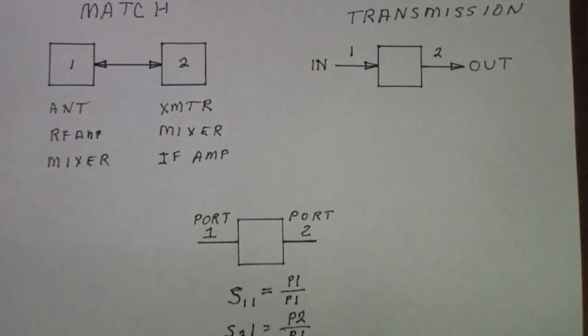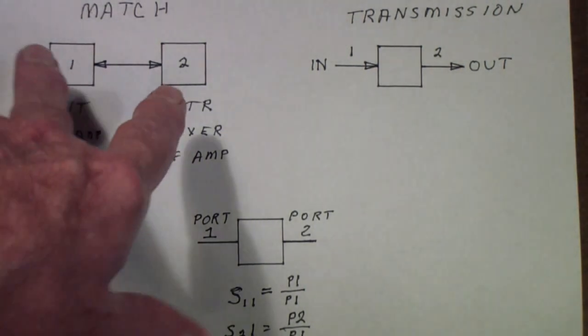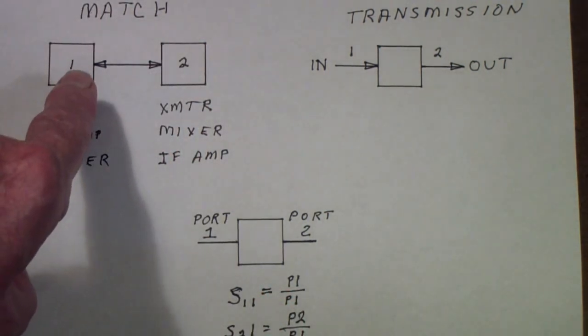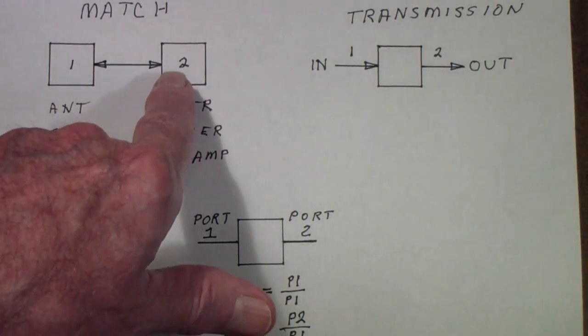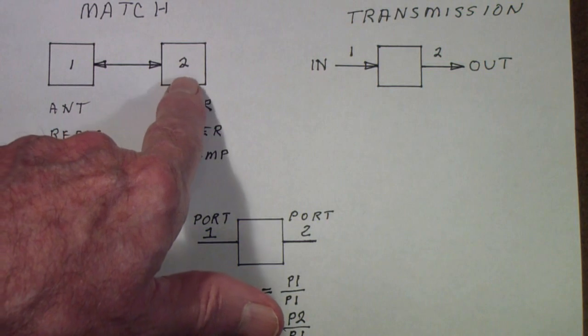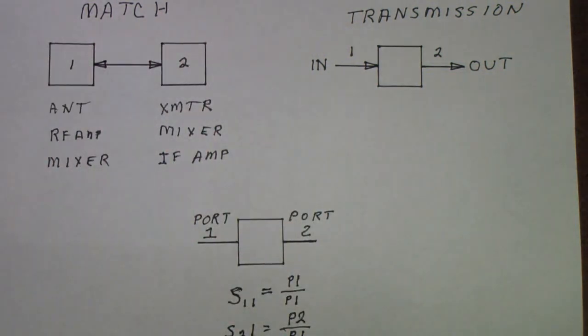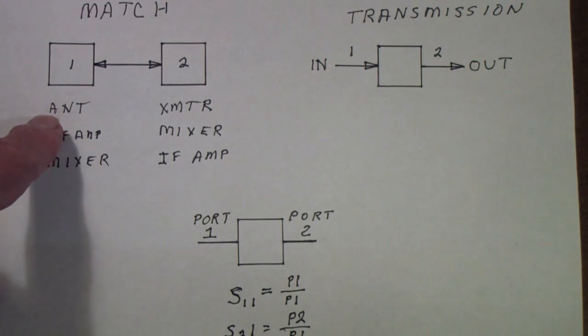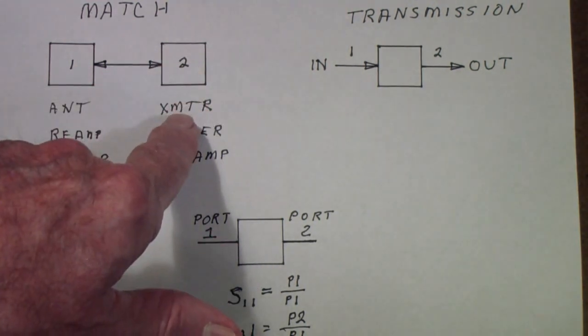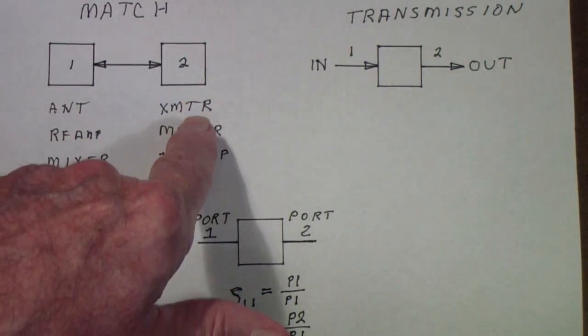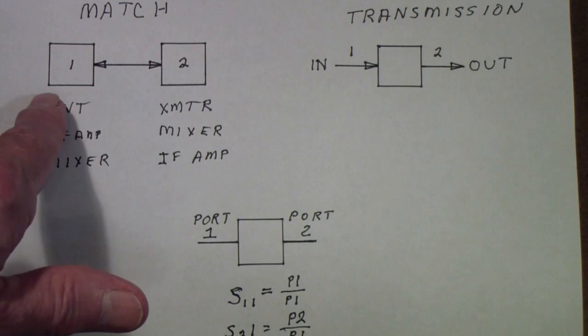So here's what we mean by match and transmission. Match is where you want to find out the characteristics of a device because you either already know or you intend to measure the characteristics of another device, and you want to match those two devices together. This device can be something like an antenna, this might be a transmitter, and this is the typical measurement of SWR that ham radio operators use. You want to match a transmitter to an antenna, usually through a feed line.